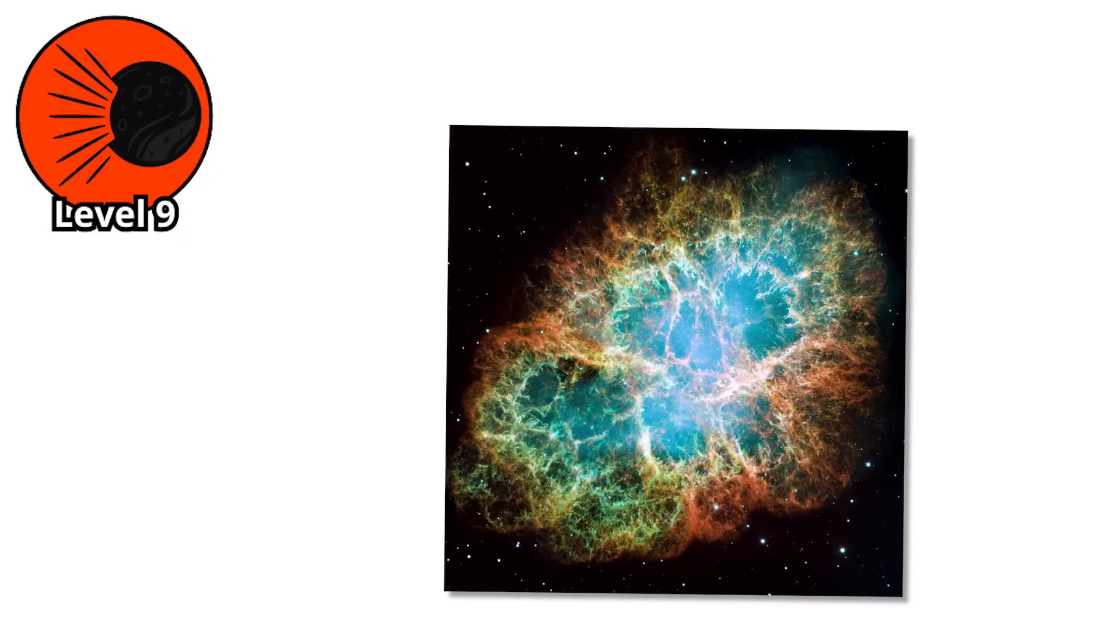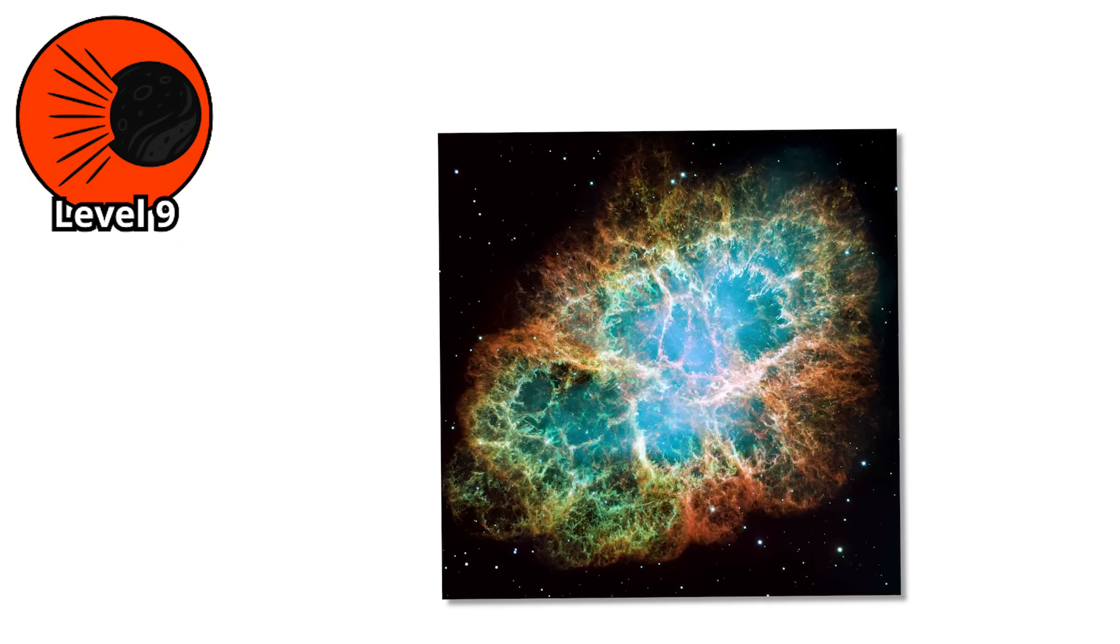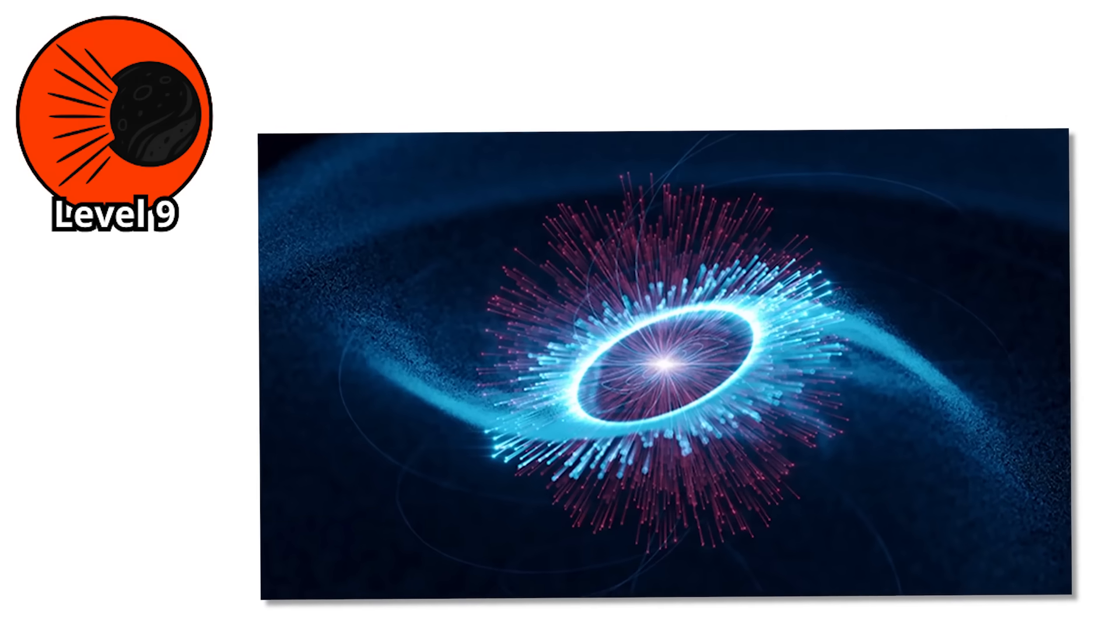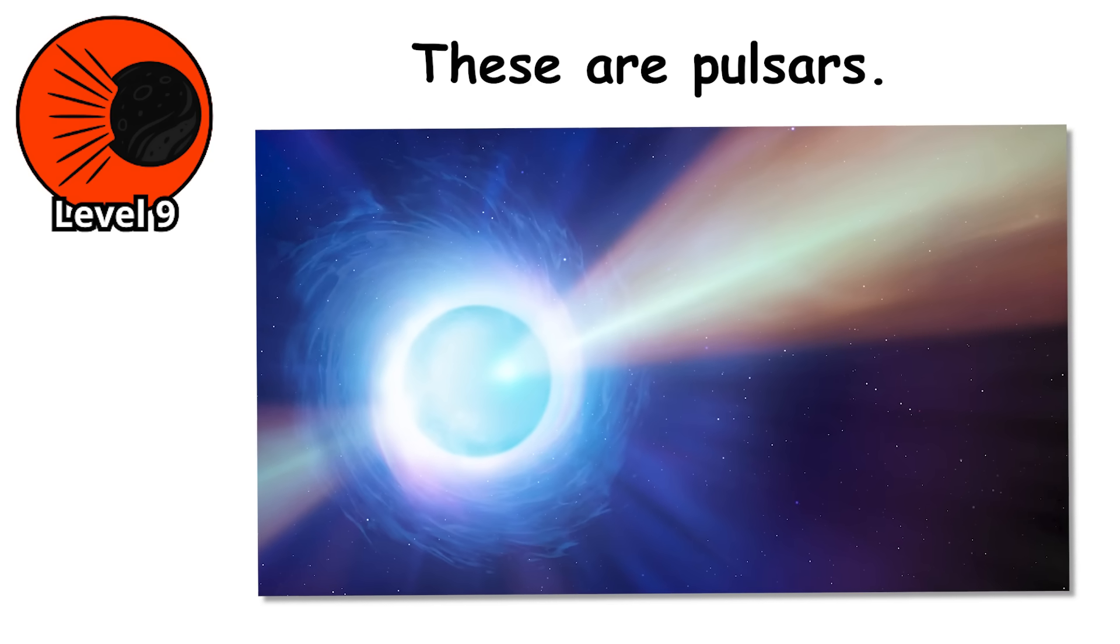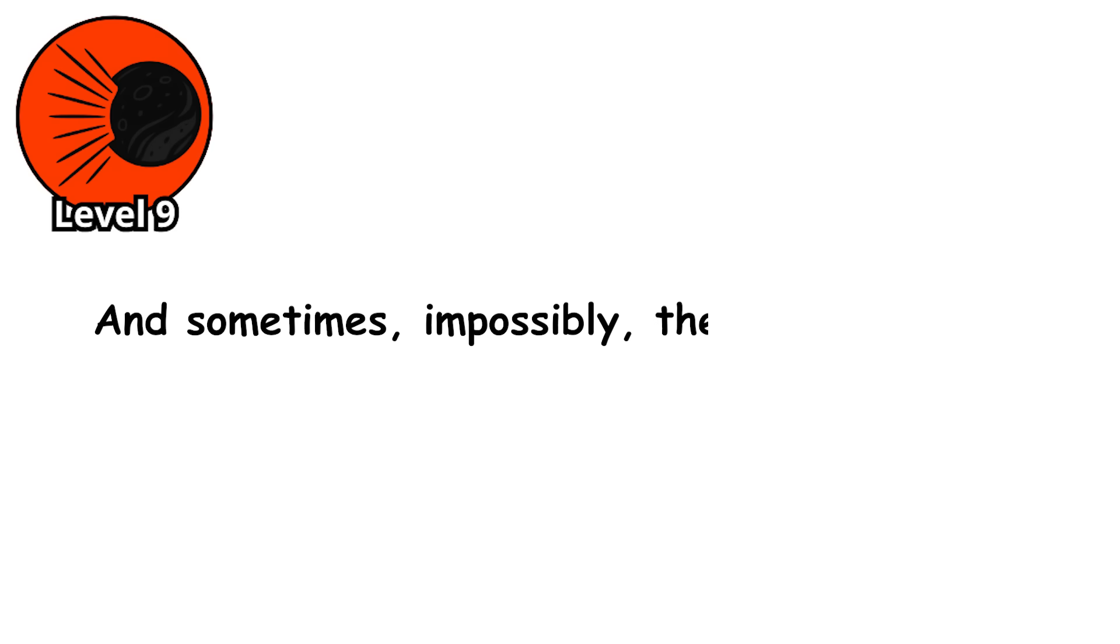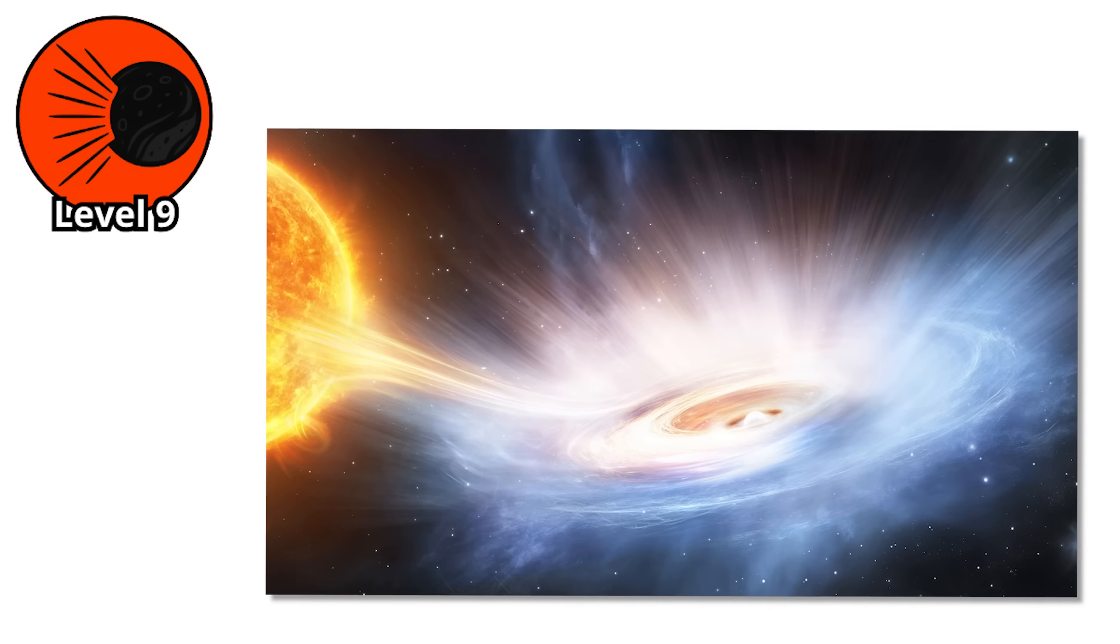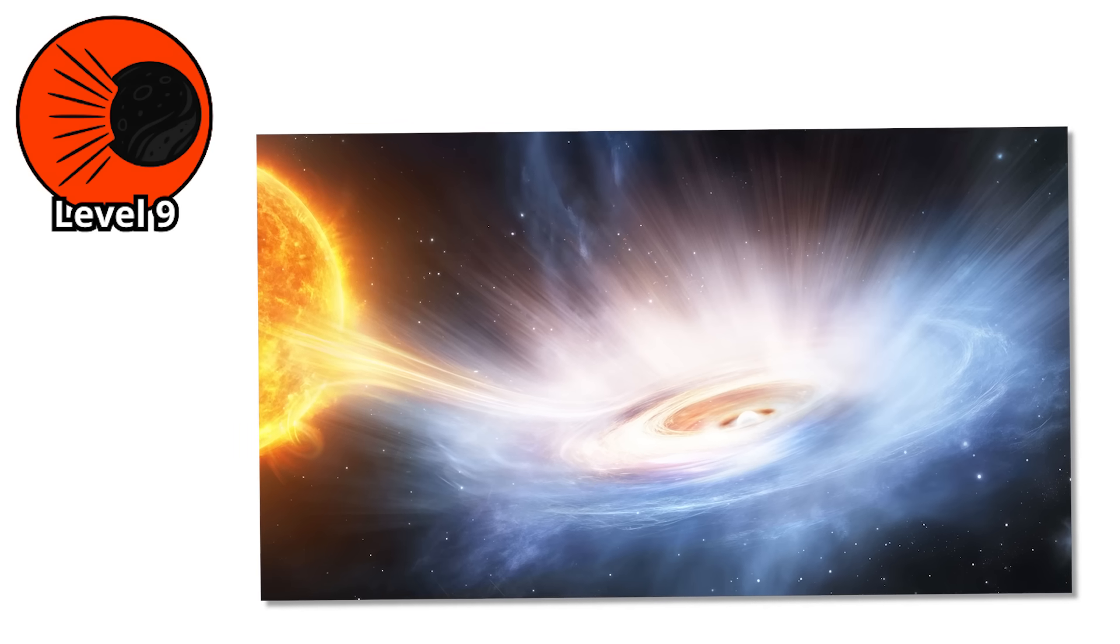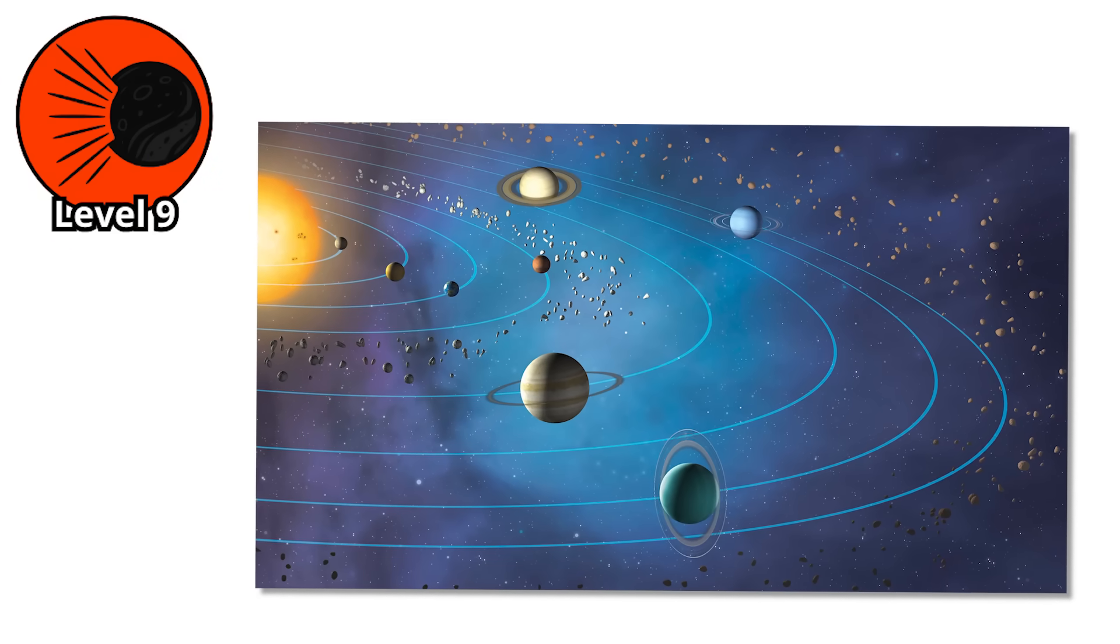Level 9. When a massive star dies in a supernova, sometimes its core collapses into a neutron star - a city-sized object so dense that a teaspoon of its material would weigh a billion tons. Some spin hundreds of times per second, emitting beams of radiation from their magnetic poles. These are pulsars, and sometimes impossibly they have planets. These pulsar planets shouldn't exist. The supernova that created the pulsar should have destroyed any planets in the system. Yet we've found them, small worlds orbiting the rapidly spinning corpses of dead stars, bathed in lethal radiation.